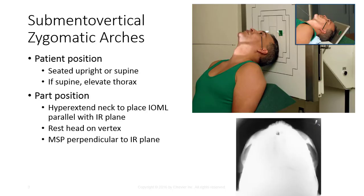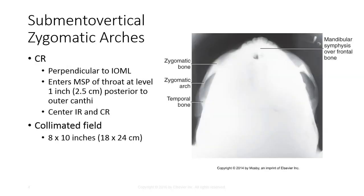For the SMV projection of the zygomatic arches, position the patient seated upright or supine. If supine, elevate the thorax with a sponge or pillows to allow for easier extension of the neck. Hyper-extend the patient's neck to place the IOML parallel with the IR plane. You may rest the vertex of the head on the IR. The MSP should also be perpendicular to the IR plane. Place the CR perpendicular to the IOML, ensuring it enters the MSP of the throat at a level 1 inch posterior to the outer canthi.